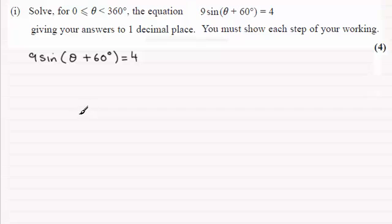So what we need to do is divide both sides by 9 first of all. So that would give us the sine of the angle. Theta plus 60 degrees equals 4 ninths.